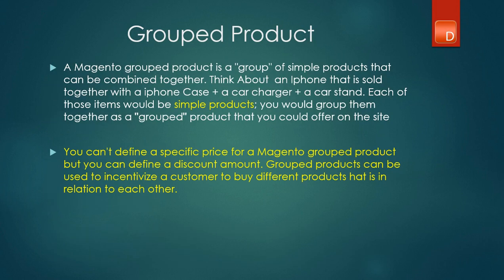Moving on, we have something called grouped products. A grouped product is something that you would sell as a group. For example, let's say you want to sell an iPhone and group some related items along with it — like an iPhone case, an iPhone car charger, and an iPhone car stand. You can incentivize people to buy things as a group and give them a discount, saying that if you buy your iPhone and these products together, you'll get a discount. One downside is you can't put a specific price on individual items, but you can give them a discount.